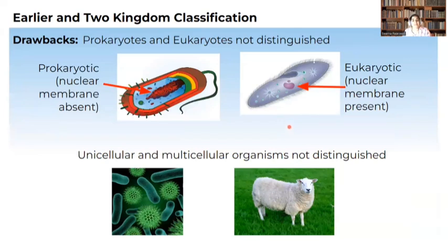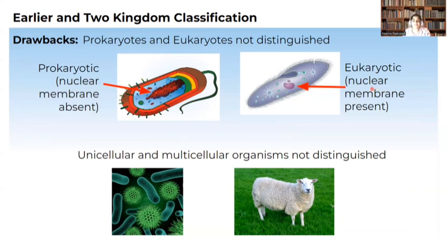In the two-kingdom classification, there are some drawbacks. Prokaryotes and eukaryotes are not distinguished. There are organisms where the nuclear membrane is absent, classified as prokaryotes, whereas organisms where the nuclear membrane is clearly present are called eukaryotes. But this distinction is not fully explained in the two-kingdom classification. Even unicellular and multicellular organisms are not clearly distinguished.